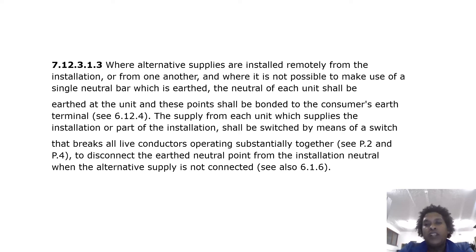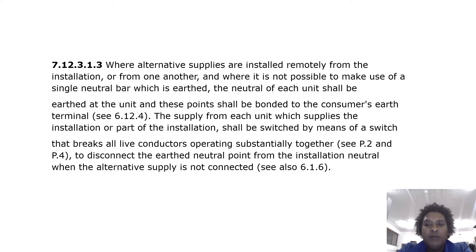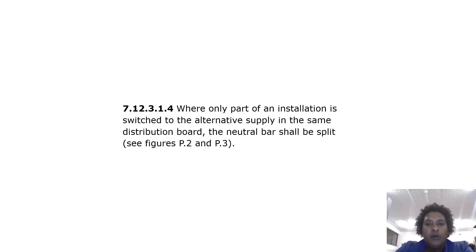Where alternative supplies are installed remotely from the installation or from one another and a single earthed neutral bar is not possible, the neutral of each unit shall be earthed at the unit and bonded to the consumer's earth terminal. The supply from each unit shall be switched by means of a switch that breaks all live conductors substantially together to disconnect the earth neutral point from the installation neutral when the alternative supply is not connected. Where only part of an installation is switched to the alternative supply in the same distribution board, the neutral bar shall be split.